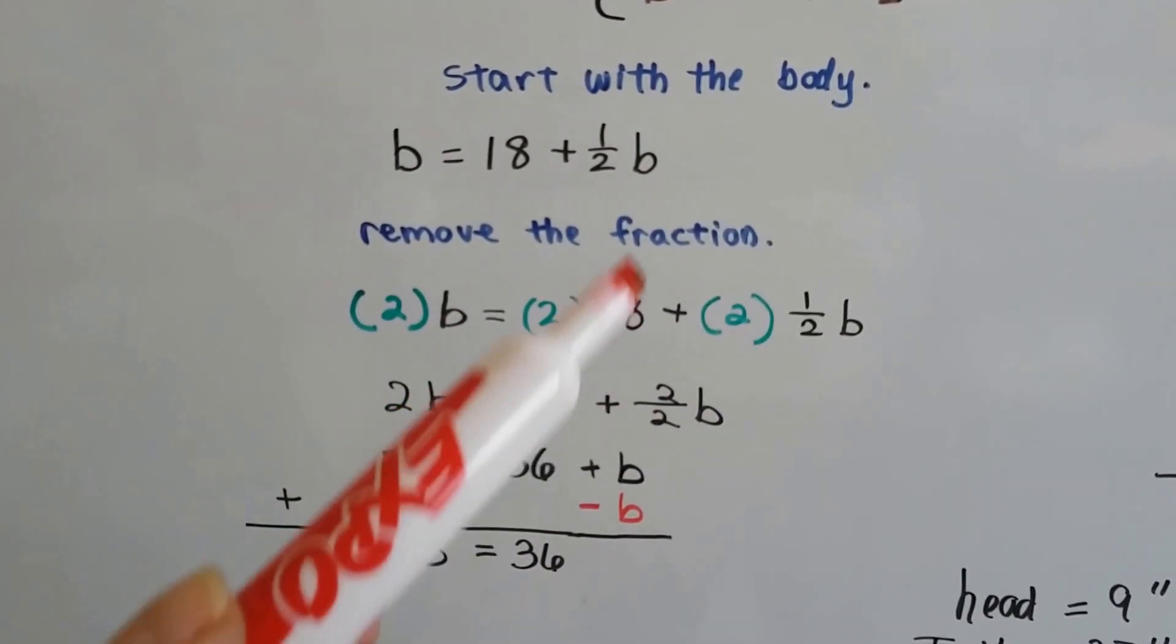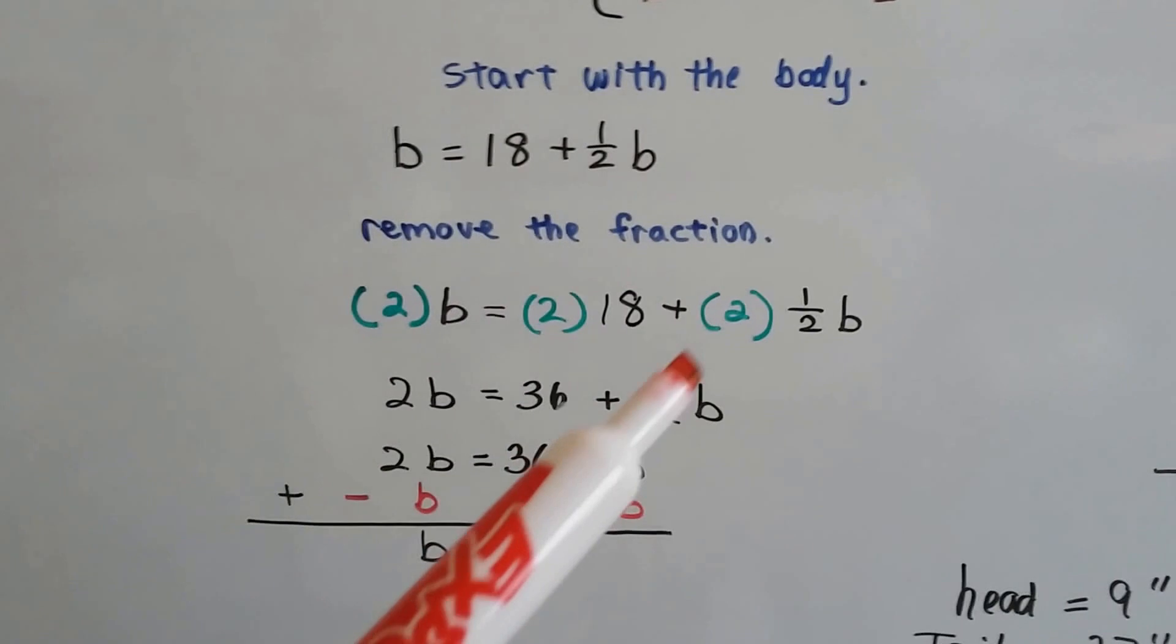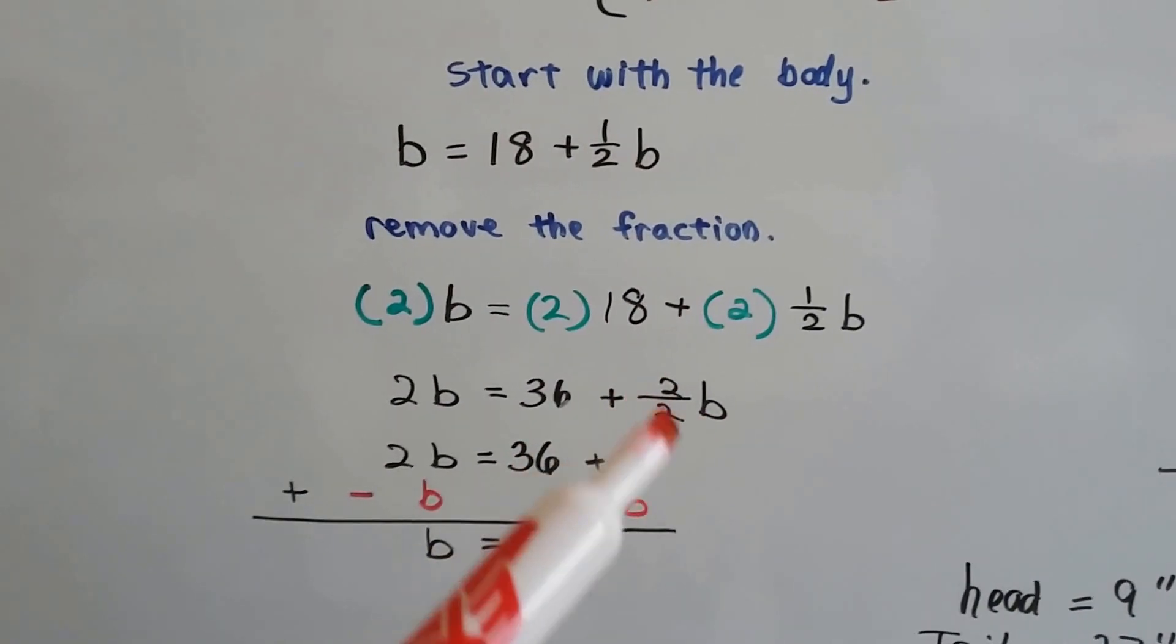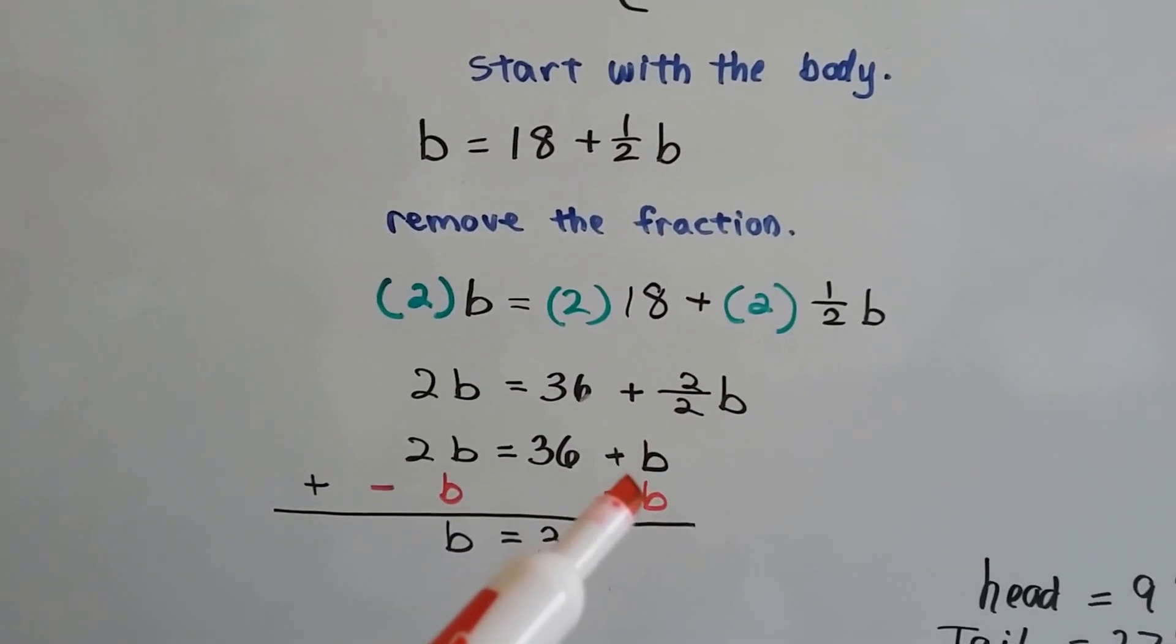and we get 2b equals 36 plus 2 over 2b, which is a one, isn't it? And we don't have to write that one. It's just a b.